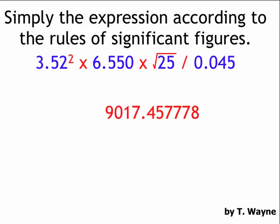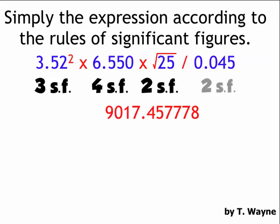The rule of multiplication, whichever value has the least number of sig figs, your answer is rounded to that same least number of sig figs. 3.52, that's three sig figs. 6.550, that's four sig figs. 25 is two sig figs. And the last one, 0.045, is also two sig figs.